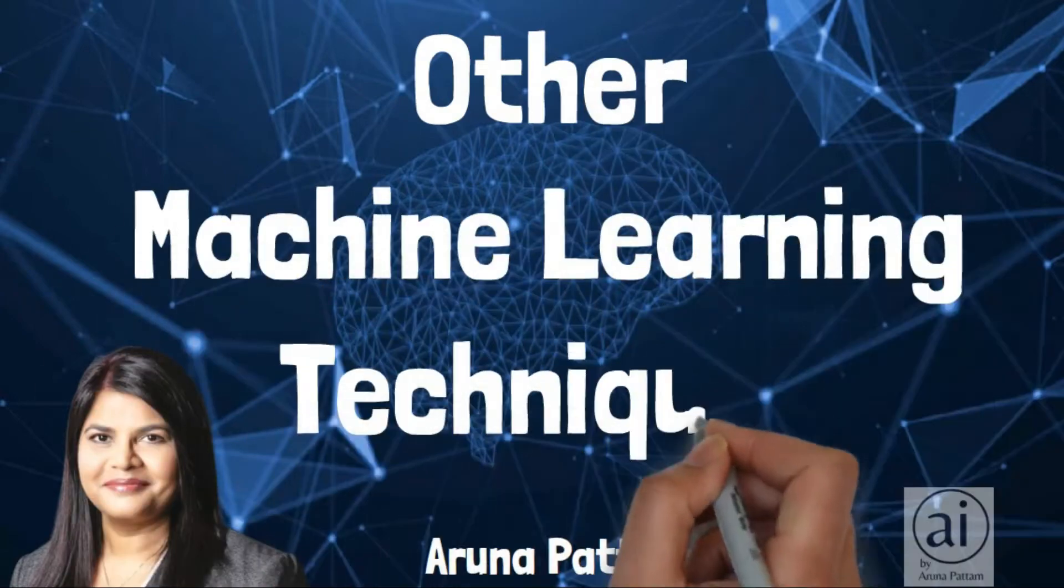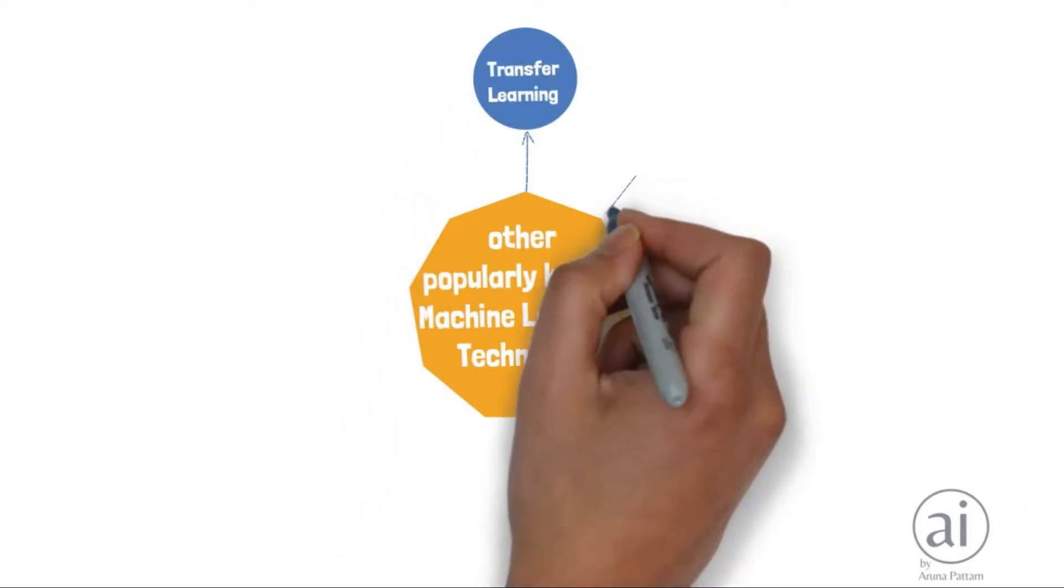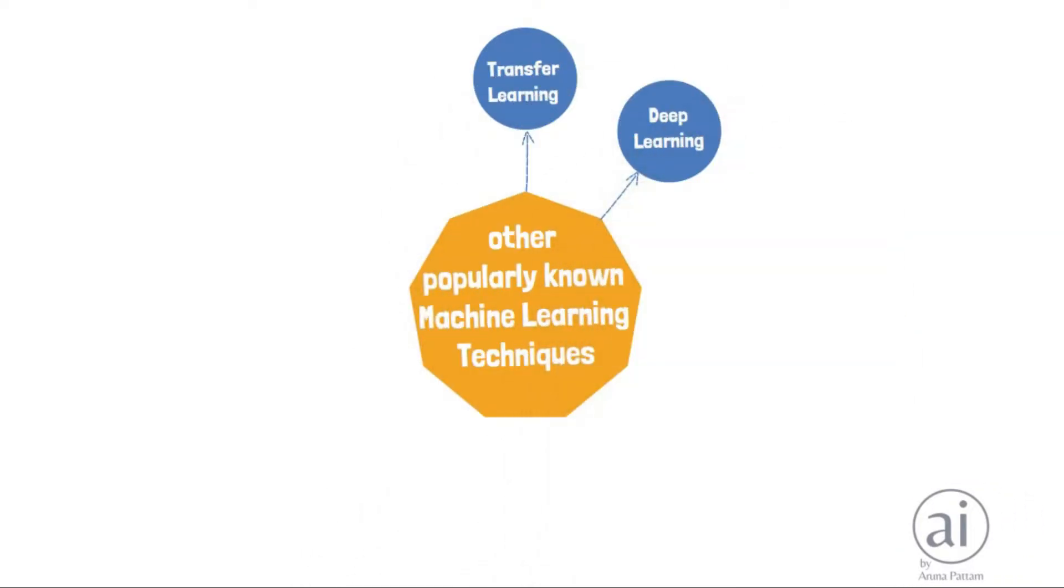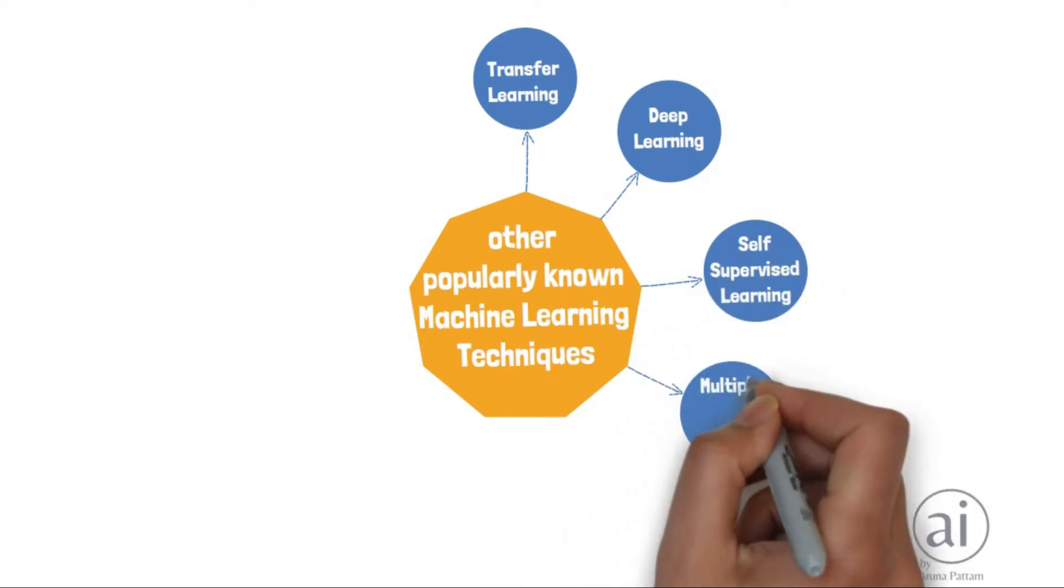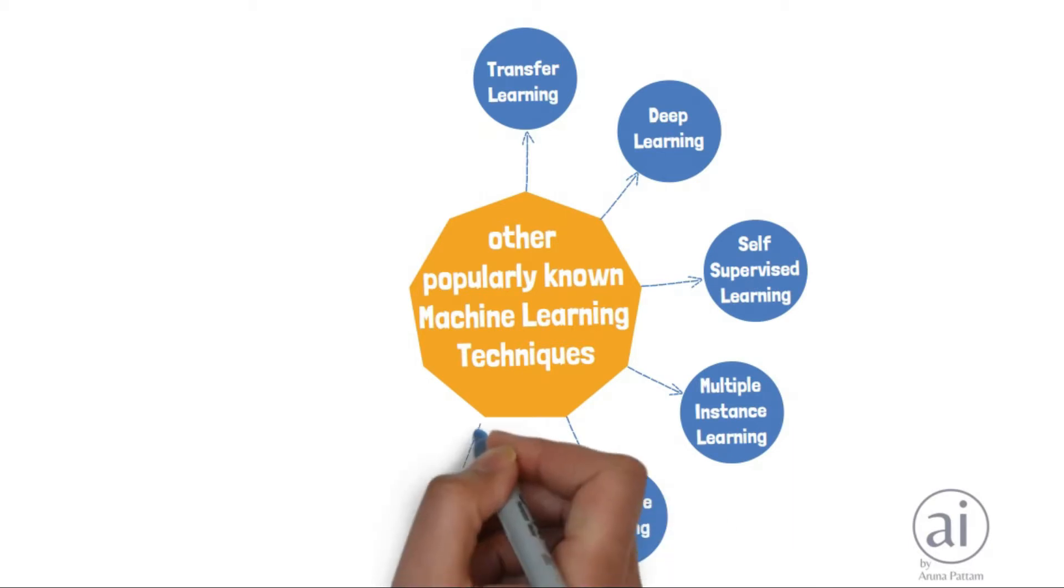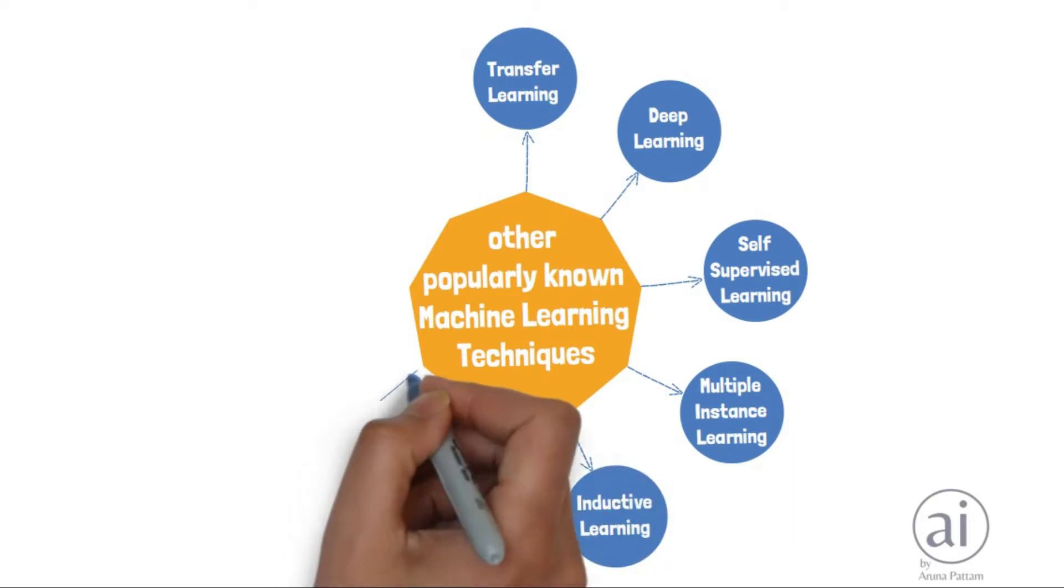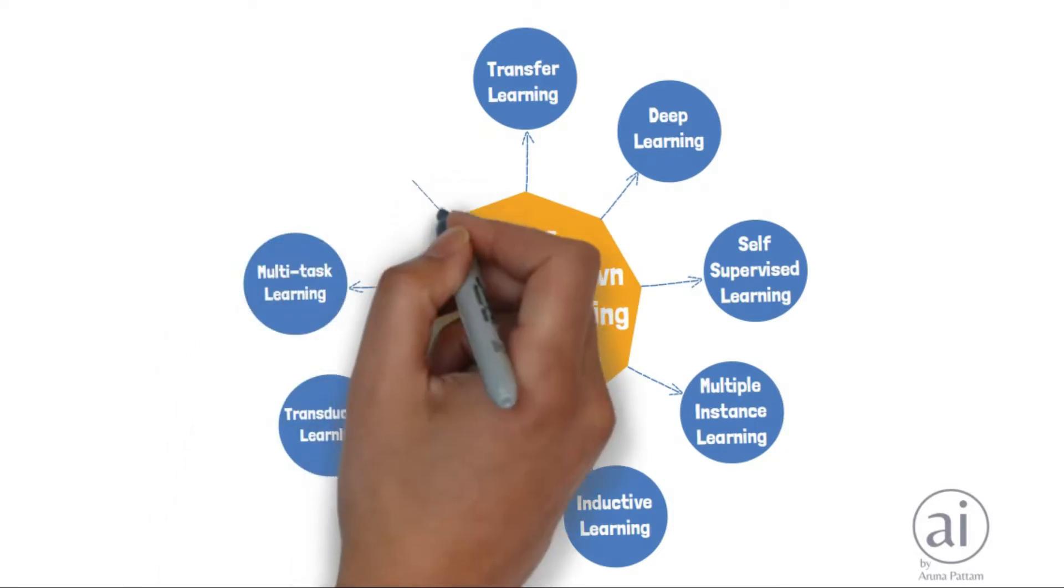These include transfer learning, deep learning, self-supervised learning, multiple instance learning, inductive learning, deductive learning, transductive learning, multi-task learning, and active learning. Let's now go through each of them in a little detail.